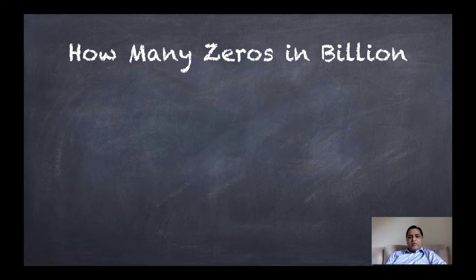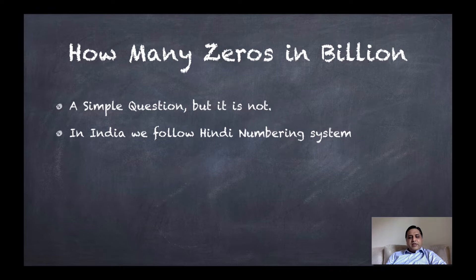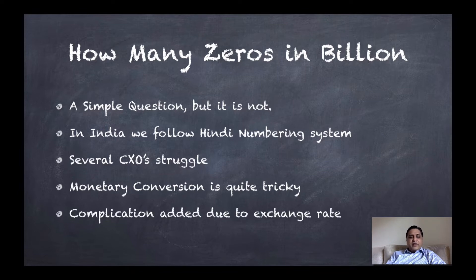To answer how many zeros in a billion, you need to look at first that it is a very simple question, but it is not. In India, we follow a numbering system that complicates the entire situation. Several CXOs struggle with this and find it very difficult to figure out how many zeros are actually there in a billion. Monetary conversion is also quite tricky because the exchange rate complicates the entire situation.